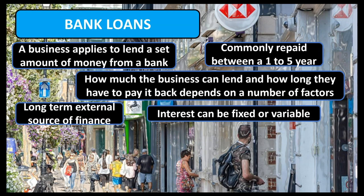The interest on the bank loan can be set at a fixed rate at the time of the loan agreement, such as 7.9% APR, and this will be the set amount of interest that is charged until the loan has been repaid.